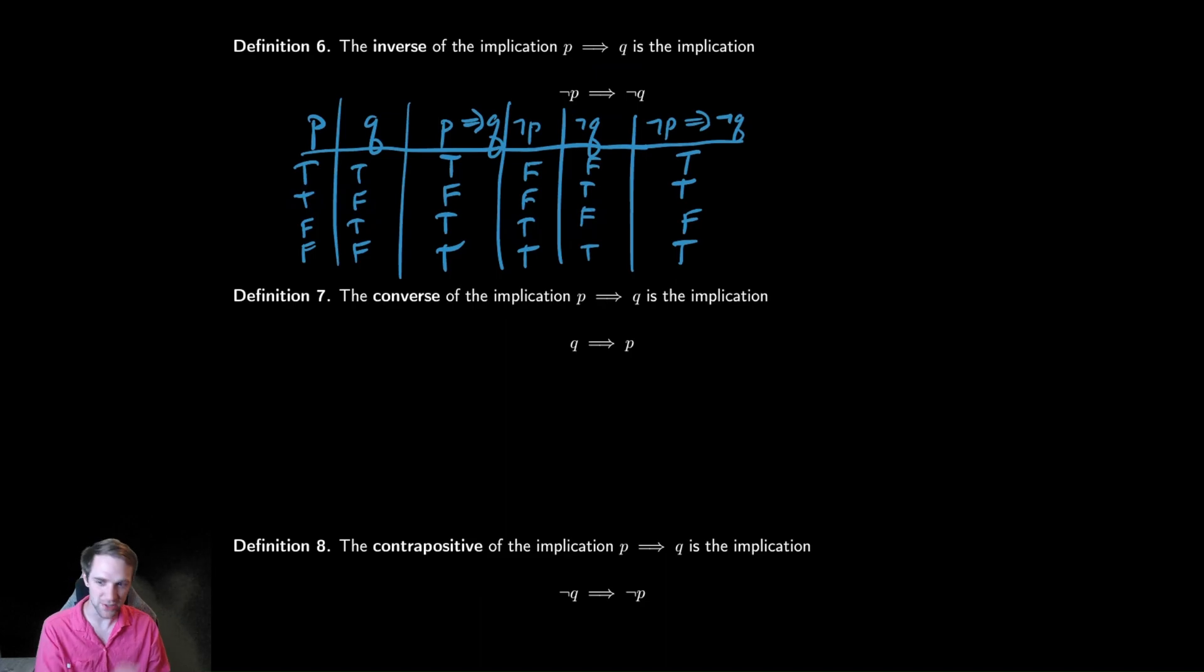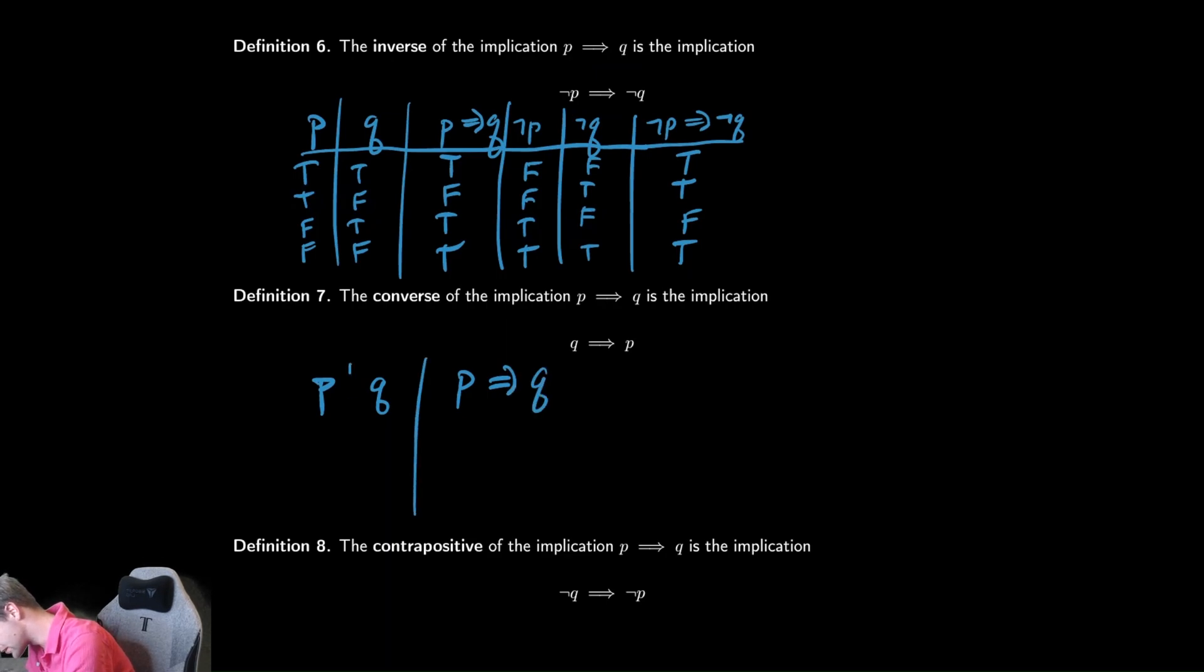Another way you might imagine switching it, and we talked a little bit about this before, is the converse. This is where you switch which variables which. So when you have p implies q, you might ask, what about q implies p? So let's do the exact same thing.